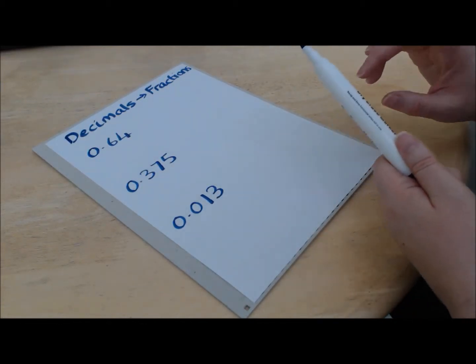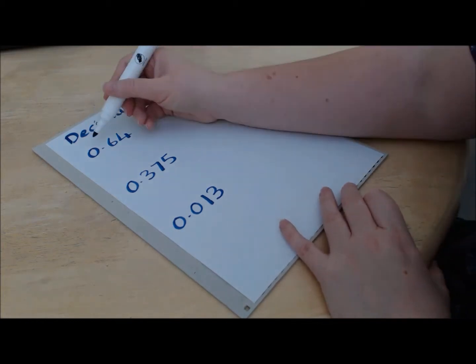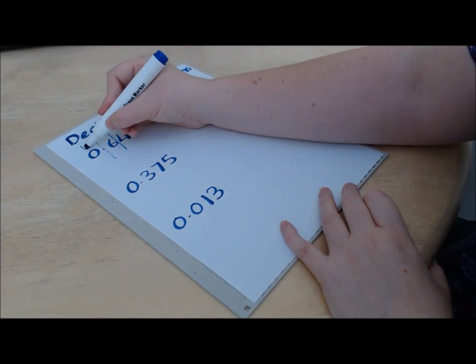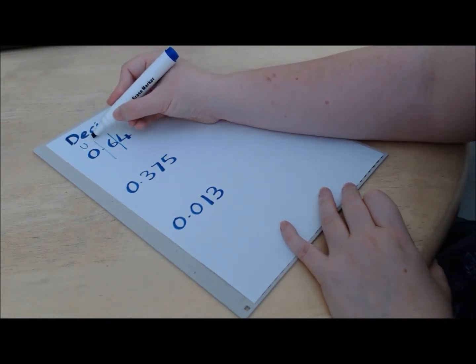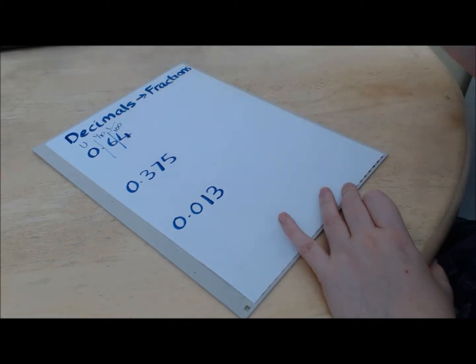So the clue and the way that we're going to tackle this is by understanding our place value. So let me just draw in some lines here. So we've got our units here, we've got our tenths here, and we've got our hundredths here.